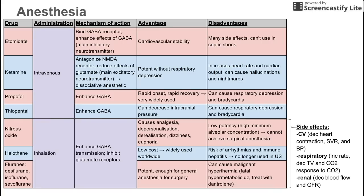The side effects of the inhalation anesthetics — nitrous oxide, halothane, and the fluranes — are largely the same. They all cause cardiovascular side effects: decreased heart rate, decreased systemic vascular resistance, and decreased blood pressure. They also affect the respiratory system: they increase respiratory rate but decrease tidal volume and decrease the body's response to carbon dioxide. Additionally, they decrease blood flow to the kidneys and therefore decrease the glomerular filtration rate.